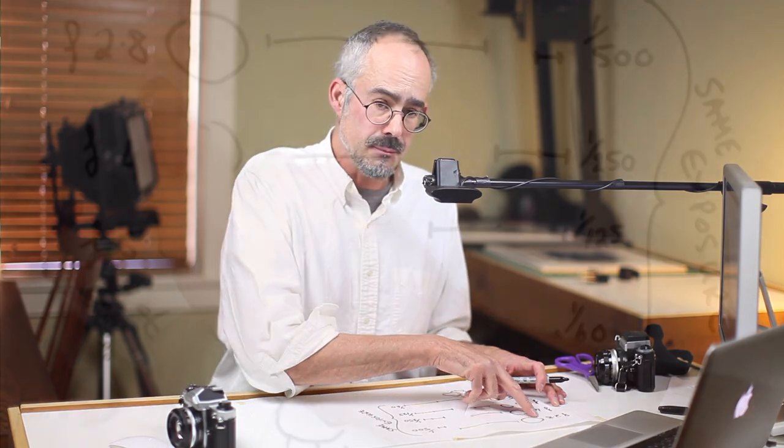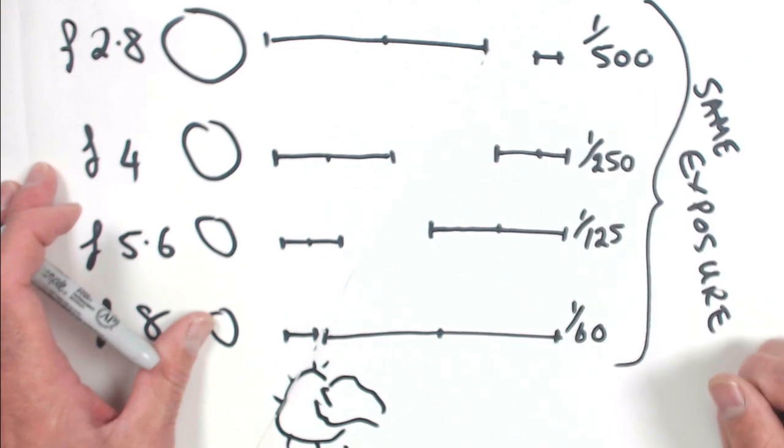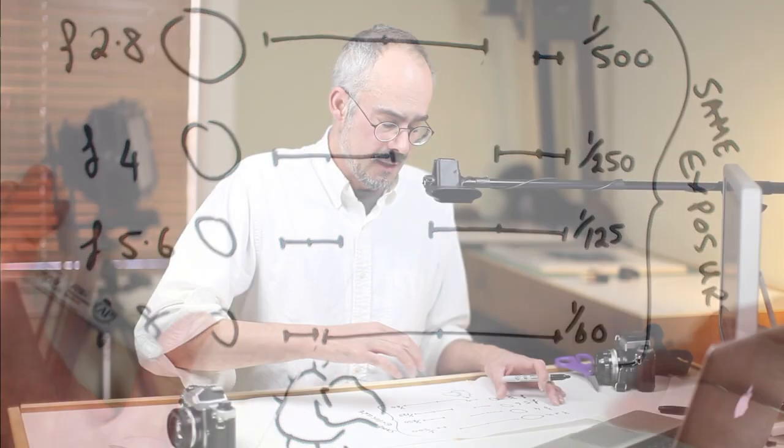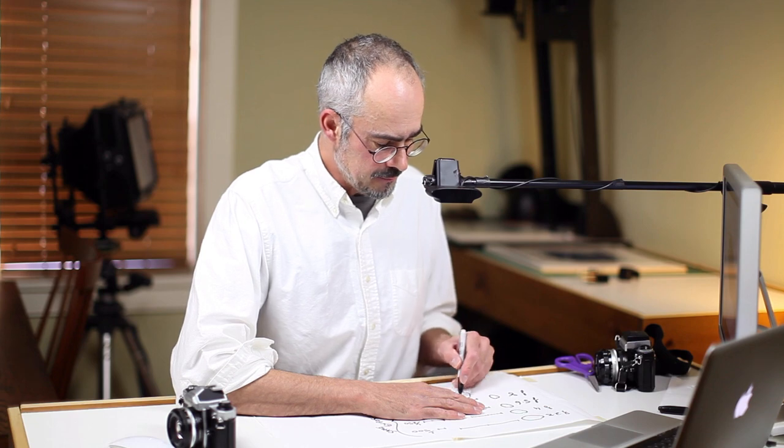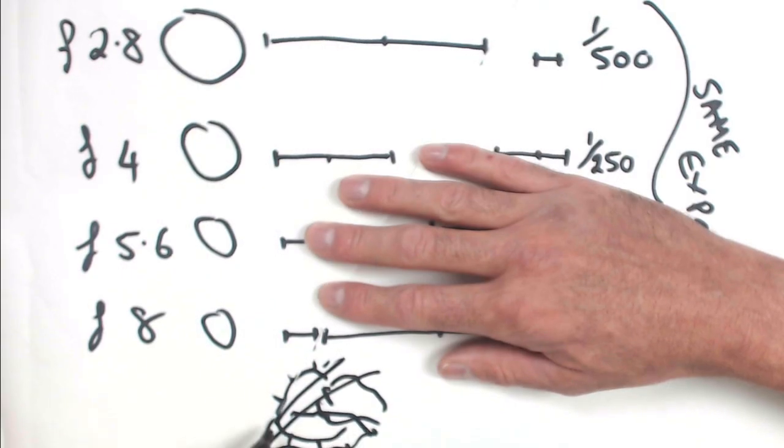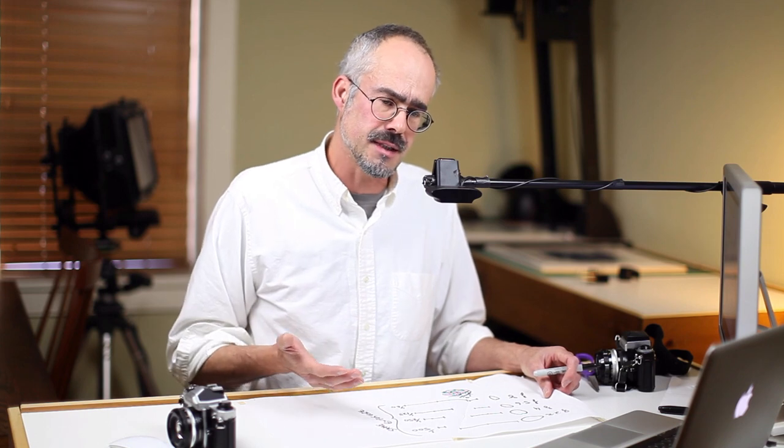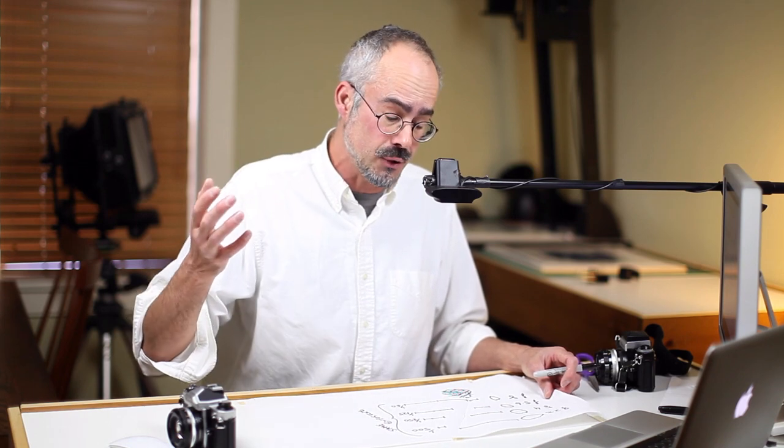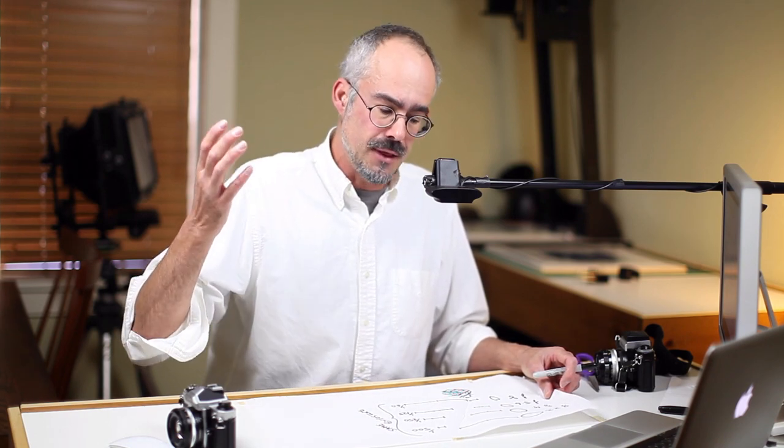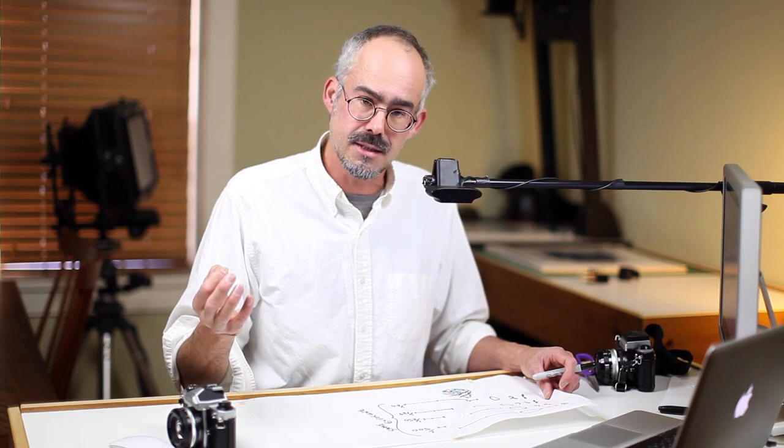And your light meter tells you you can use F2.8 at 1/500th of a second. I want you to imagine now that some more clouds come along and begin to obscure the sun. That means there's less light around. That means there's less light coming from your light source, the sun. Therefore, your subject will be darker. Therefore, you need to let more light into the camera.